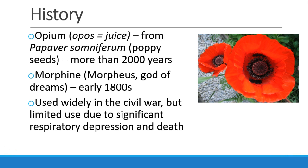First, a brief historical reference. Opium, which is named from the word opus, meaning juice, comes from the poppy seed and has been known about for more than 2,000 years. Morphine, one of the substances most commonly made from opium, is named after Morpheus, the god of dreams, and was already being used widely in the 1800s. In the Civil War, morphine was used quite a bit for battlefield injuries, but became limited once they realized the significant respiratory depression and death it would cause.